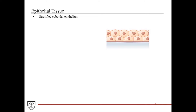The stratified cuboidal epithelium is not the most common type of tissue. It is comprised of usually just two layers of cells, with the basal cells typically being a little more columnar or slightly flatter — but not completely squamous — and the apical cells being plumper cuboidal cells. Such a tissue is typically found in ducts, where it provides structural support to keep the lumen patent.